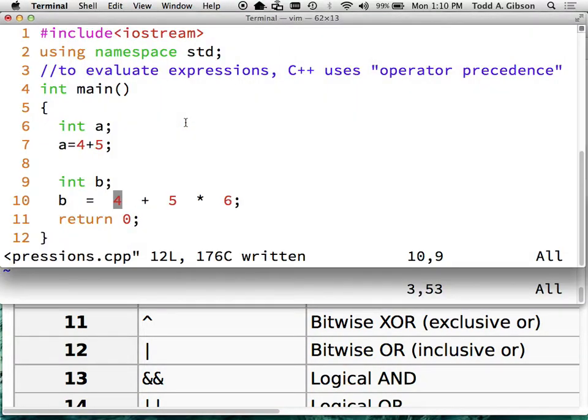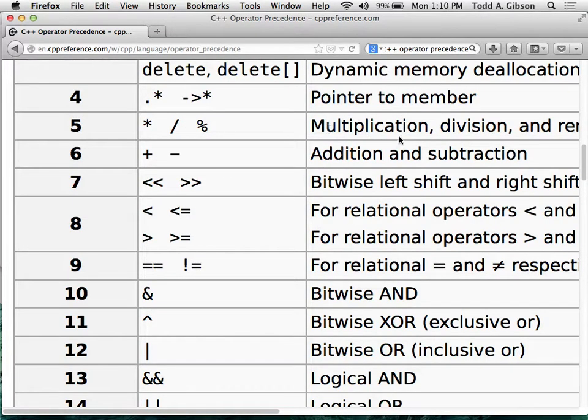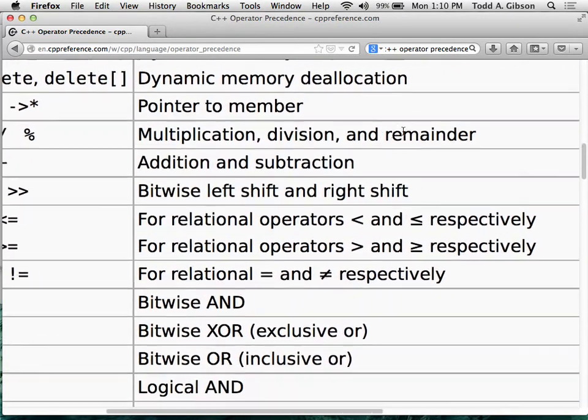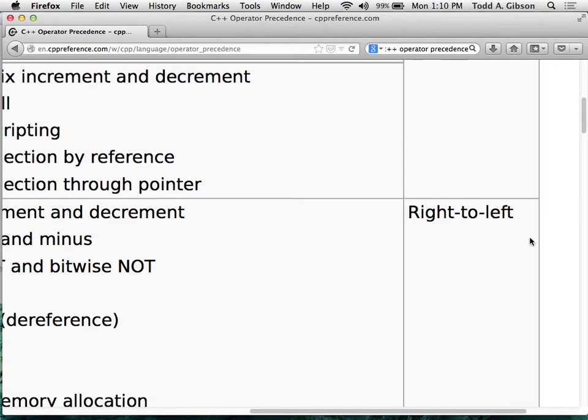Now let me ask a different question. If I have 10 divided by 5 times 3, what is that equal to? So when division and multiplication have the same precedence, how do you know which one to do first? Left to right. Yeah? So we come back here. Here's multiplication and division, left to right. You'll note that there are a few wacky ones that go from right to left.